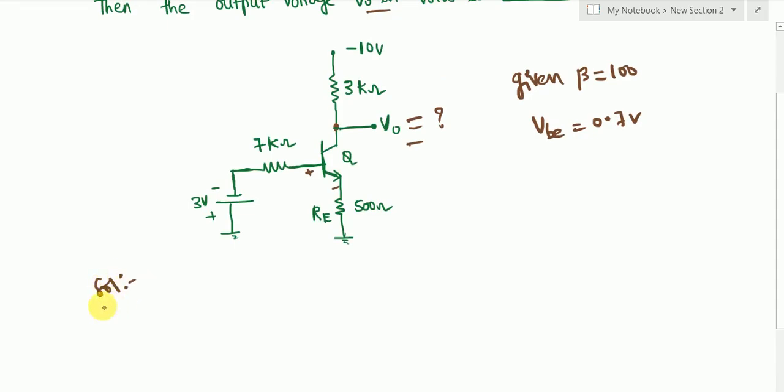So what I'm going to do is I'm going to write a KVL equation here. Now from this circuit you can see base current is given in this direction and emitter current is given in this direction.